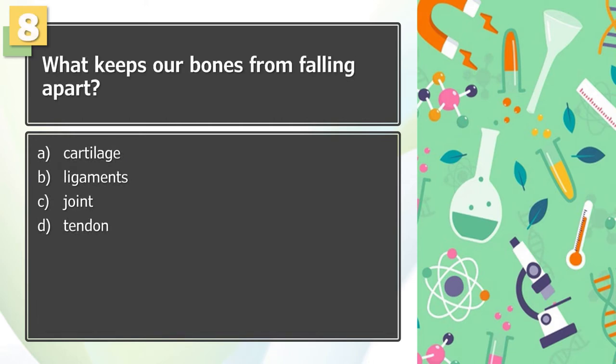Number 8: What keeps our bones from falling apart? A. Cartilage, B. Ligaments, C. Joint, D. Tendon.